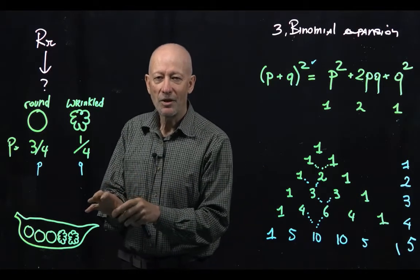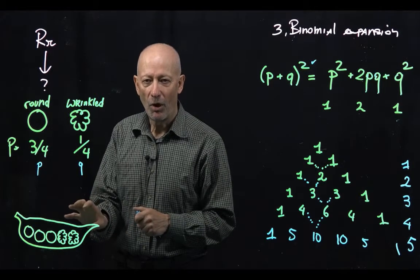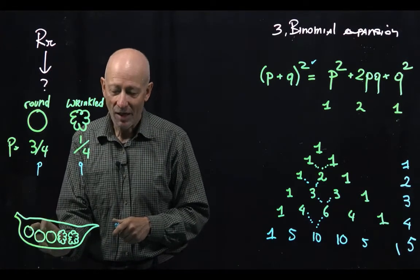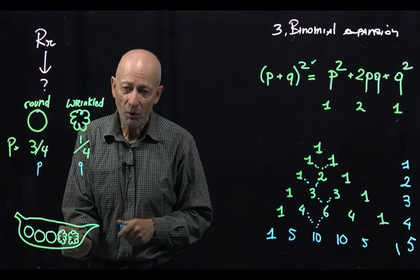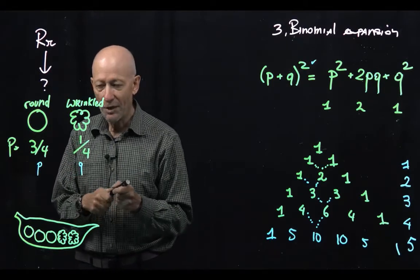But first let's calculate the probability of a given type of pod. For example, this pod has the first 3 rounds and the last 2 wrinkled. So the probability of this one is pretty easy to calculate.